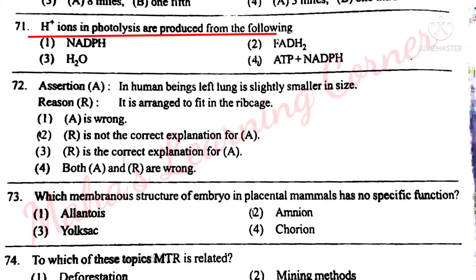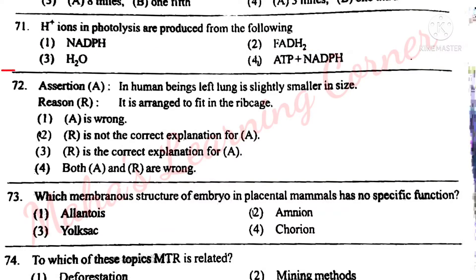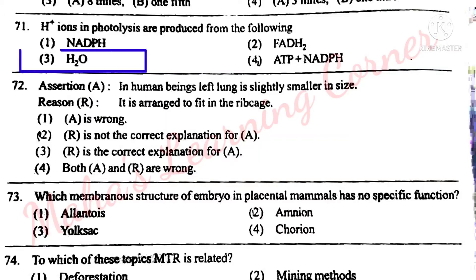Next question. H+ ions in photolysis are produced from which of the following? Options: NADPH, FADH2, H2O, ATP plus NADPH. Correct answer: Option 3 – H2O. During photolysis of water, H2O splits into H+ and OH- ions. So option 3 is the correct answer.